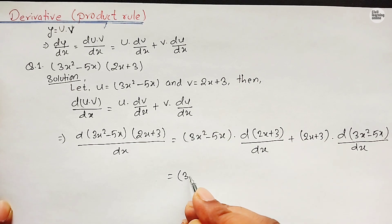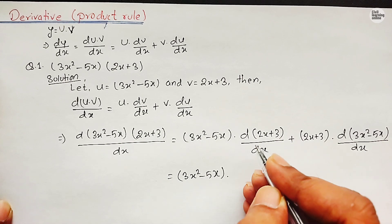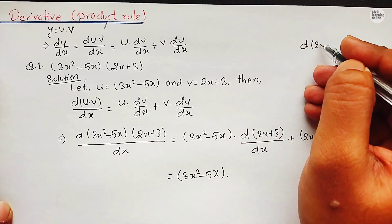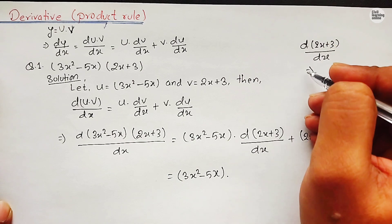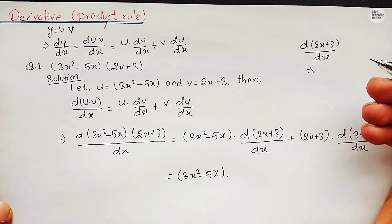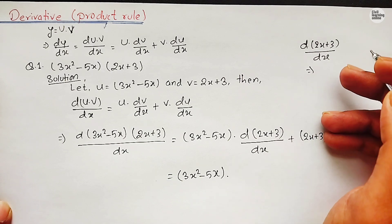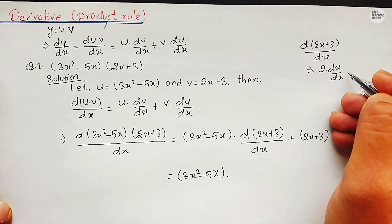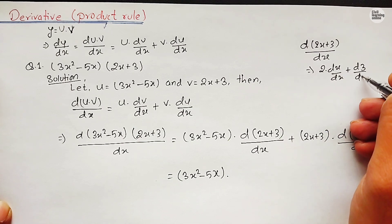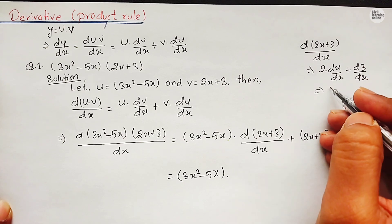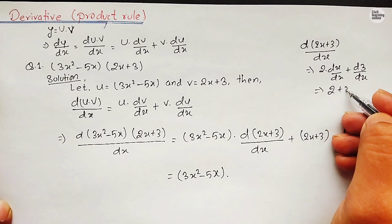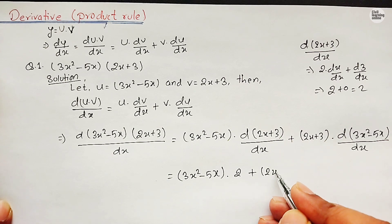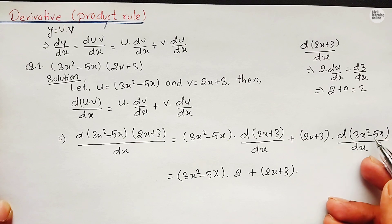We find the derivative of the different terms. For the derivative of 2x + 3 upon dx, applying the sum rule, we separate it as d(2x)/dx plus d(3)/dx, which gives 2 times dx/dx plus derivative of constant 3. The derivative of x is 1, so we get 2, and the derivative of a constant is 0, so d(2x+3)/dx equals 2.